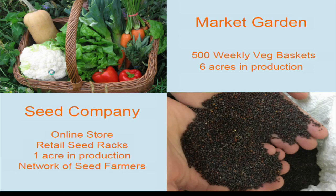On our farm, we are market gardeners and seed growers. We do 500 weekly vegetable baskets grown on six acres, and we also grow vegetable, flower, and herb seeds with an online store — seeds produced on about one acre. We buy in additional seed from a network of other growers. So we have seven acres in production on a total 17-acre farm. Once you take out paths and barns, it's 12 acres cultivated, with seven of those in cash crop — six in veg and one in seed — and five acres in cover crops in rotation.